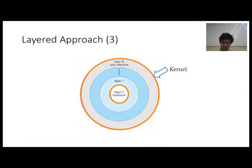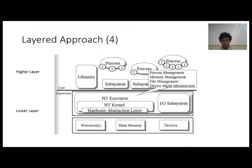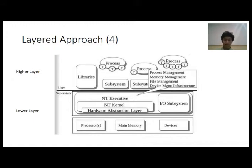A simple structure for the lower level layers shows layer 0 as the hardware, with other layers after it which are the kernel and software layers. A more complex diagram shows both lower and higher level layers. In the lower layer, you can see the hardware and all the NT kernels and NT executive with all the NT software. Meanwhile, the higher level is where all the user software and applications reside, which could include libraries, subsystems, processes, and so on.